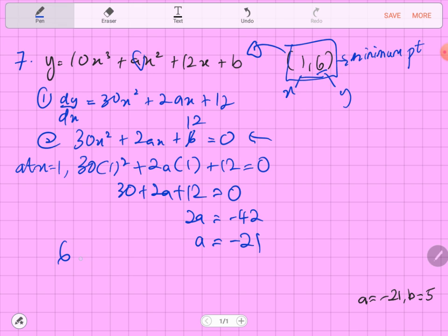y is equal to 6, and then 10 multiplied by 1 cube plus a is equal to negative 21 multiplied by 1 square plus 12 of 1 and then plus b. We don't know b, so we need to find b. This is 10, this is negative 21, this is 12.